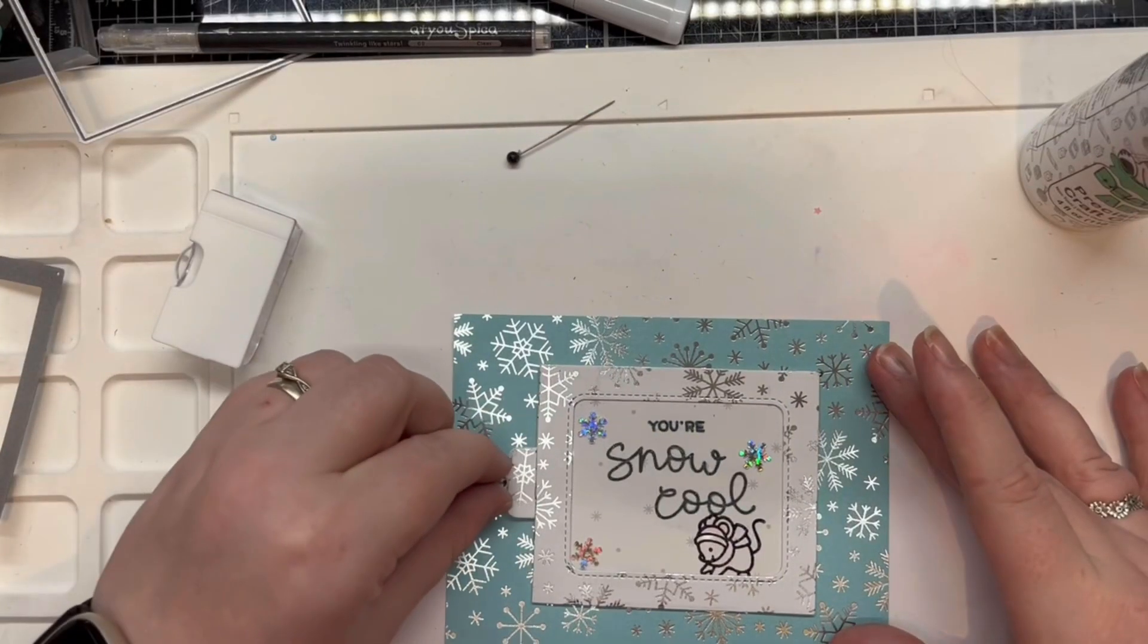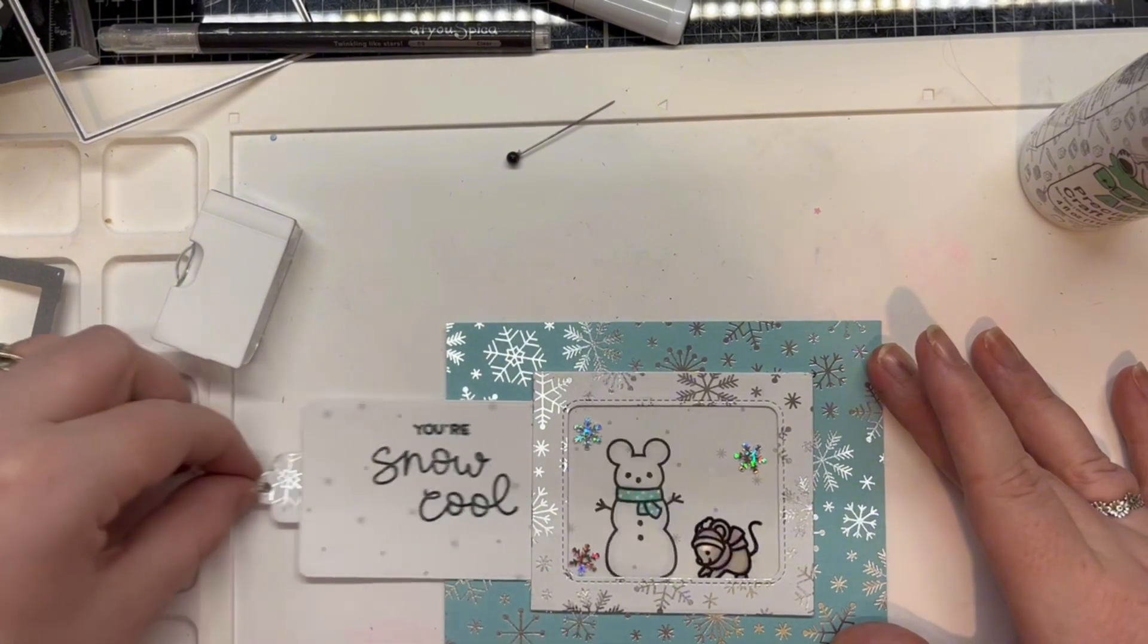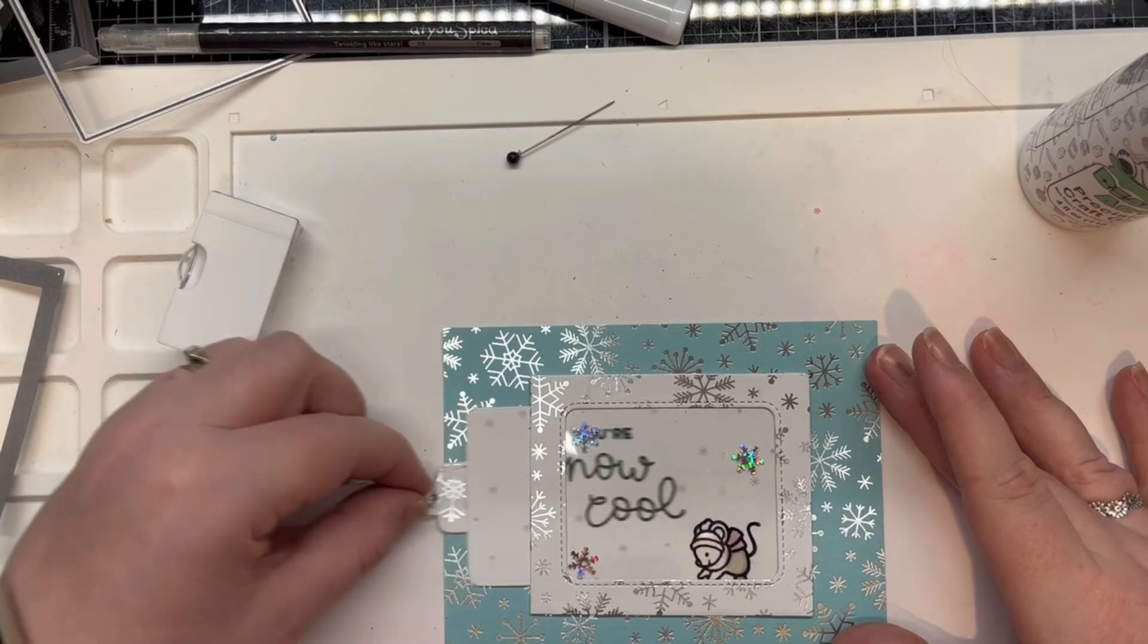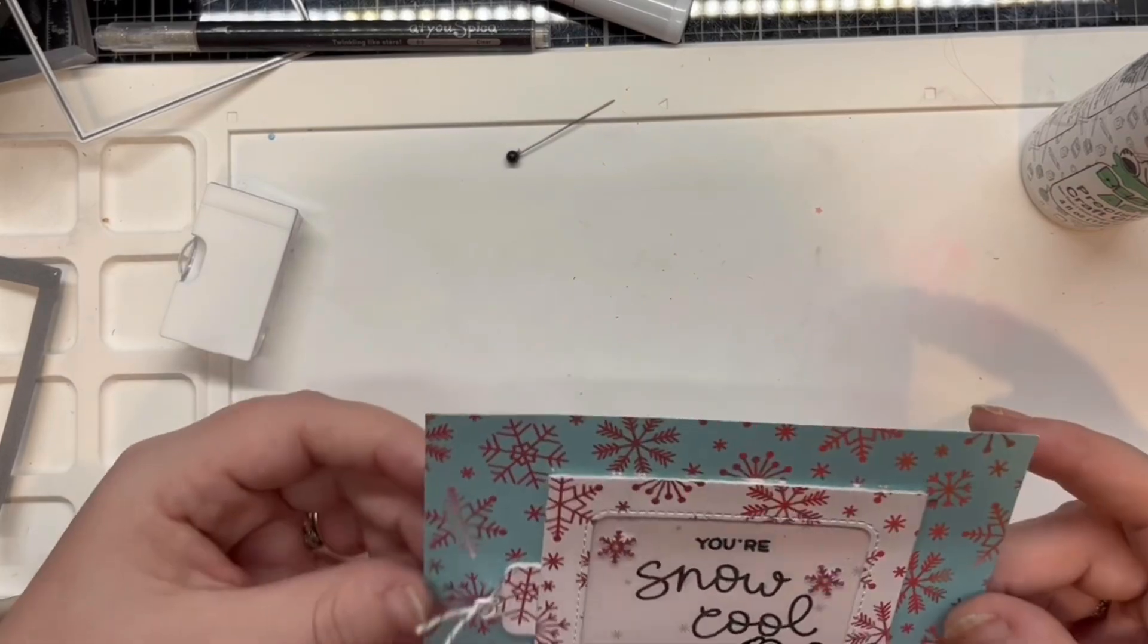This card does a ta-da all by itself as I can now share how the slider looks when it's in action. The little mouse is building a snow mouse. A very clever idea and quite a simple interactive die to put together.